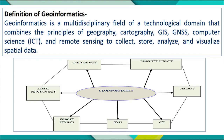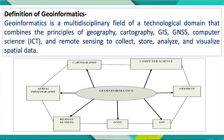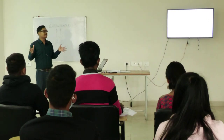GIS is a part of Geoinformatics — it is a broad umbrella. Under that we have GIS, we have GNSS, remote sensing, aerial photography, cartography — a traditional science dealing with maps — computer science, and geodesy. Geodesy is the traditional science dealing with measuring the shape and size of the Earth. If we combine all these sub-disciplines, we get the broad umbrella of science and technology known as Geoinformatics.